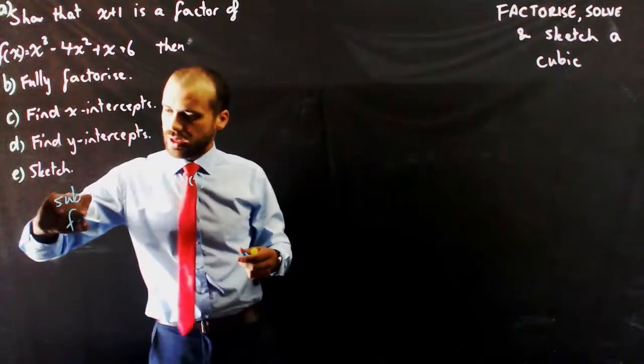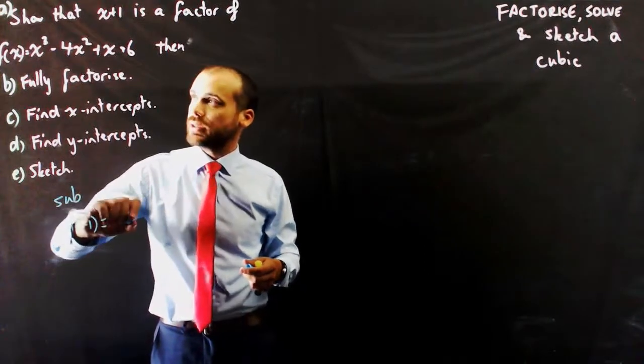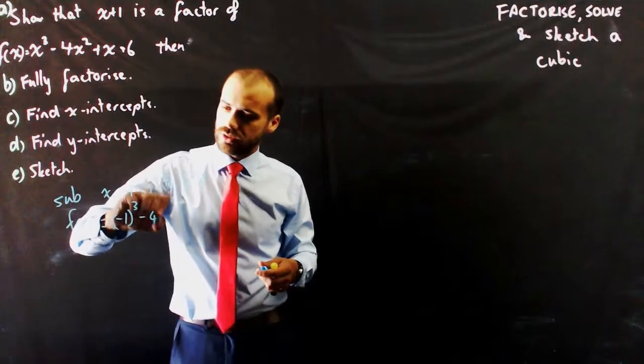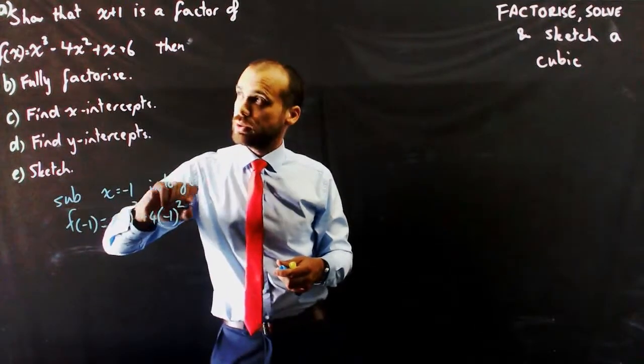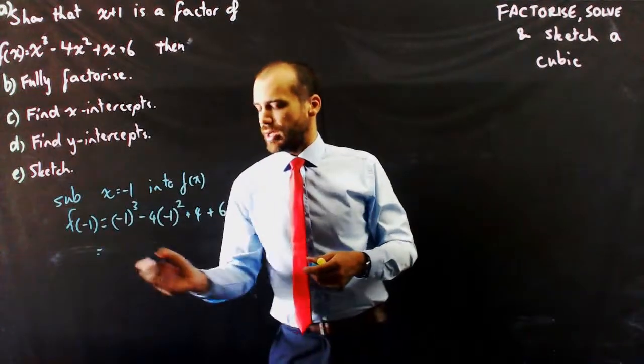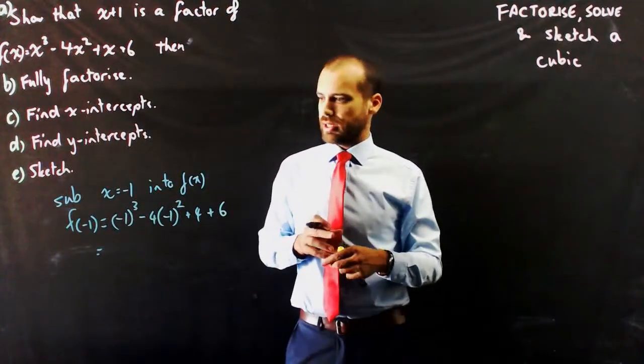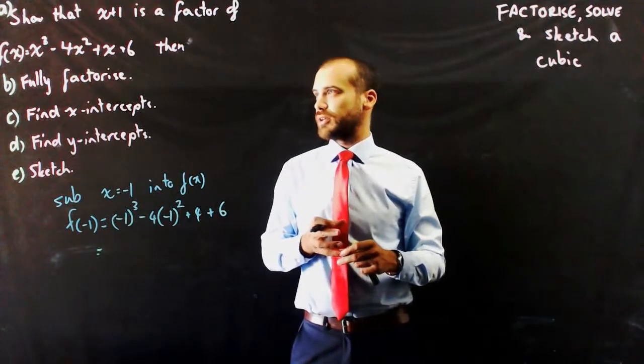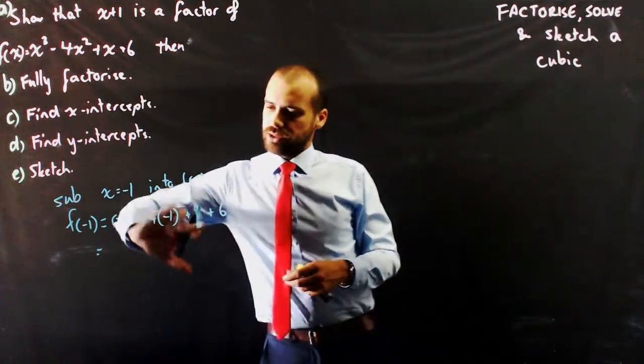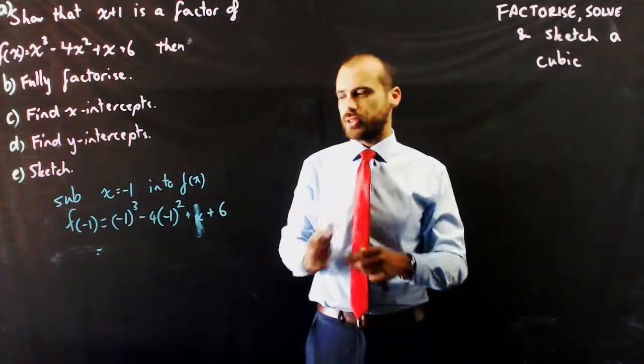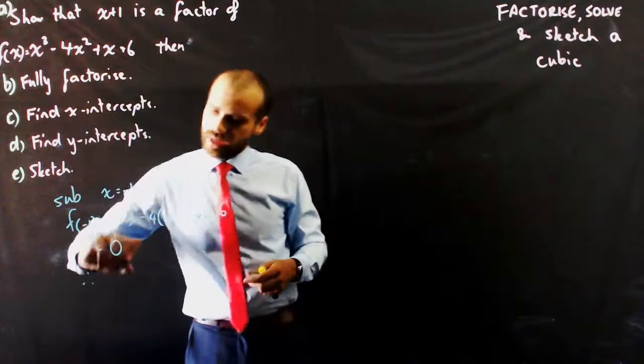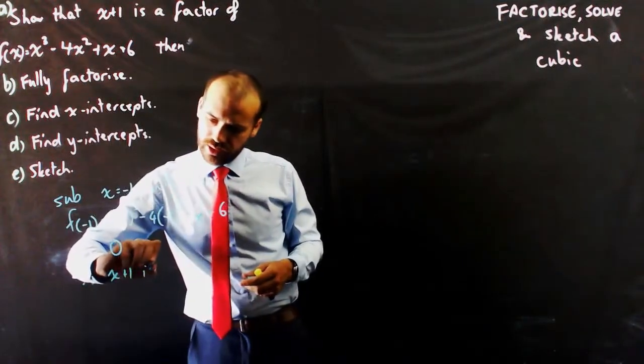So, in other words, I'm saying f of negative 1 equals negative 1 cubed minus 4 times negative 1 squared plus negative 1 plus 6. Type that into your calculator, and I feel very, very confident that the answer is going to be 0, therefore, x plus 1 is a factor.